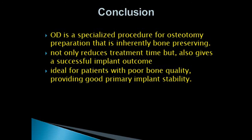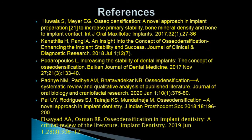In conclusion, achieving high primary implant stability is of utmost importance for the establishment of osseointegration. Osseodensification is a specialized, inherently bone-preserving procedure to improve implant primary stability, and with the help of specially designed Densa burrs it not only reduces treatment time but also gives a successful implant outcome. Osseodensification is ideal for patients with poor bone quality, providing good primary implant stability. This promising concept creates an autografted layer of condensed bone at the periphery of the implant bed using Densa burrs. Reference articles are listed, and an introductory animation video of the Densa burrs provided by Versah is available on YouTube via the description box link.